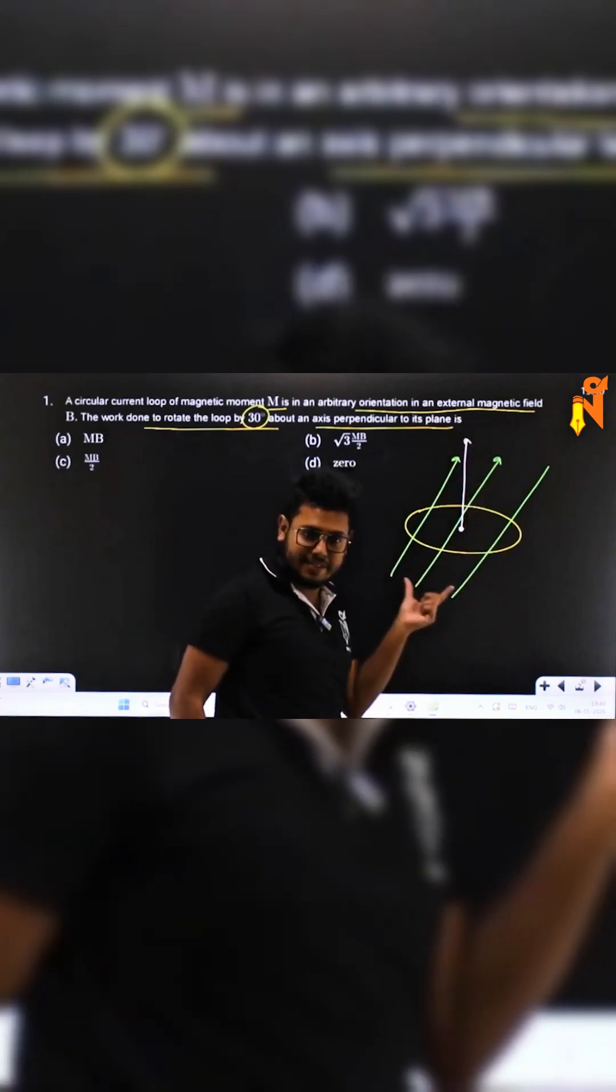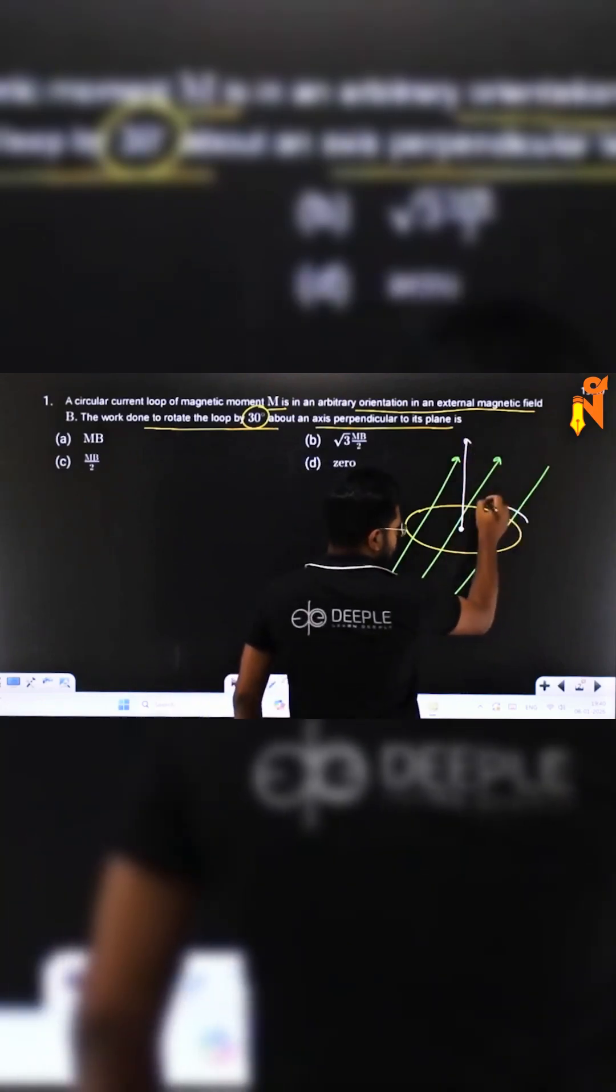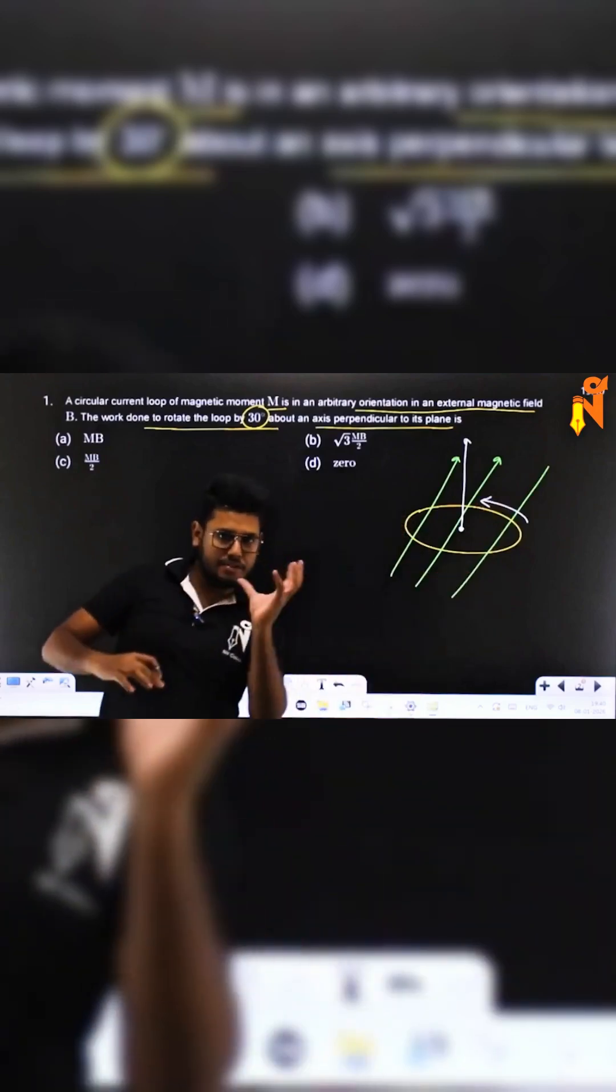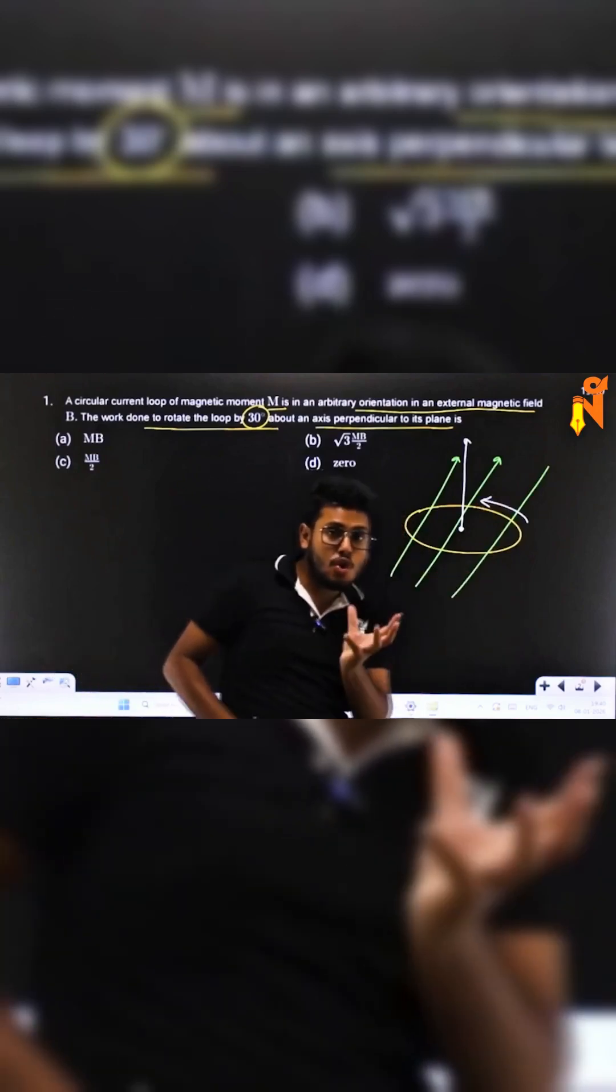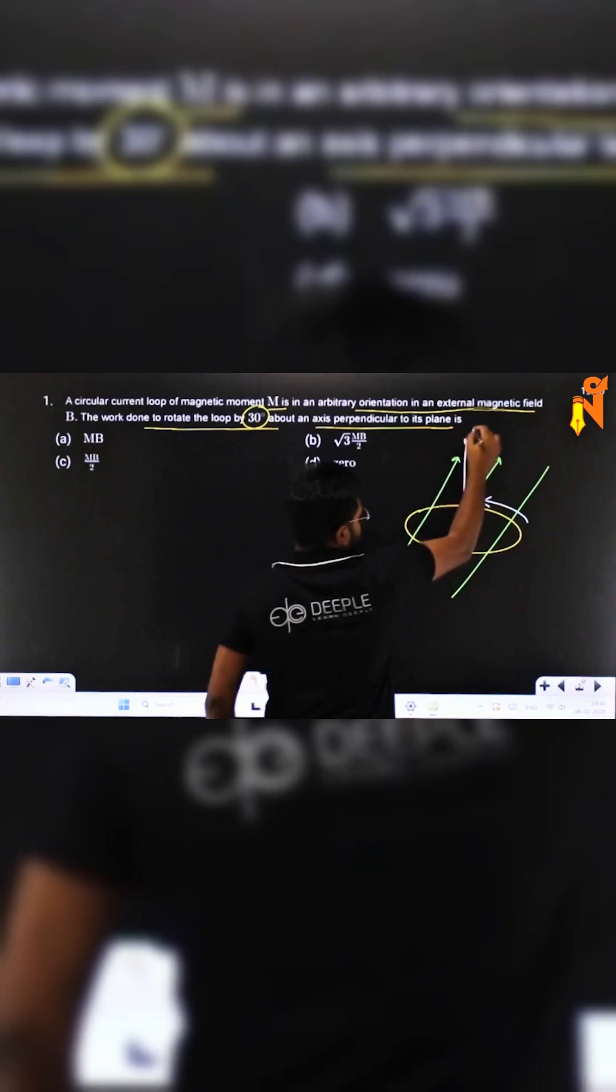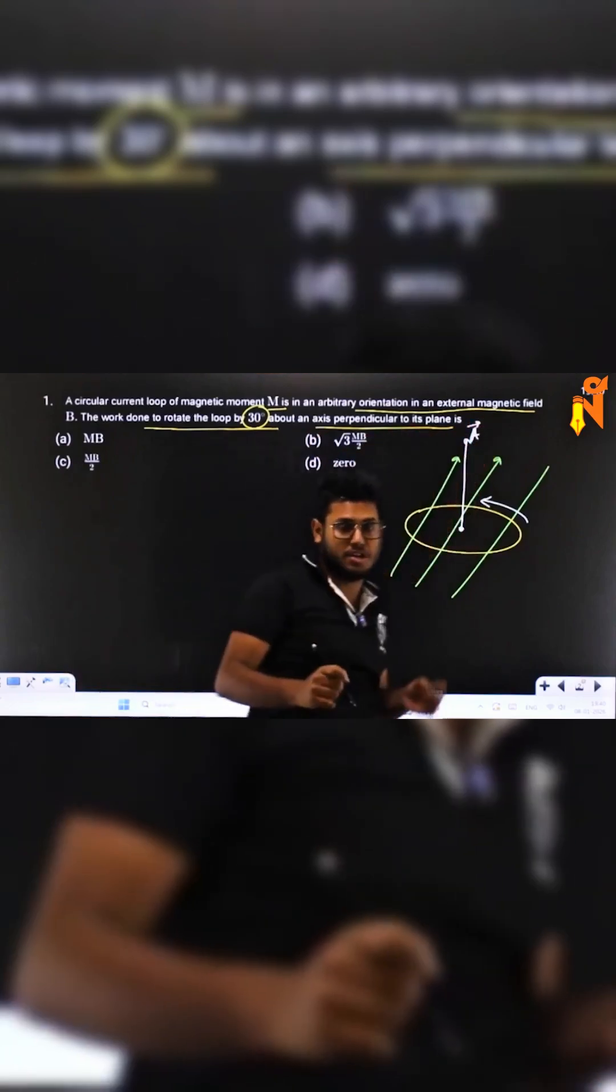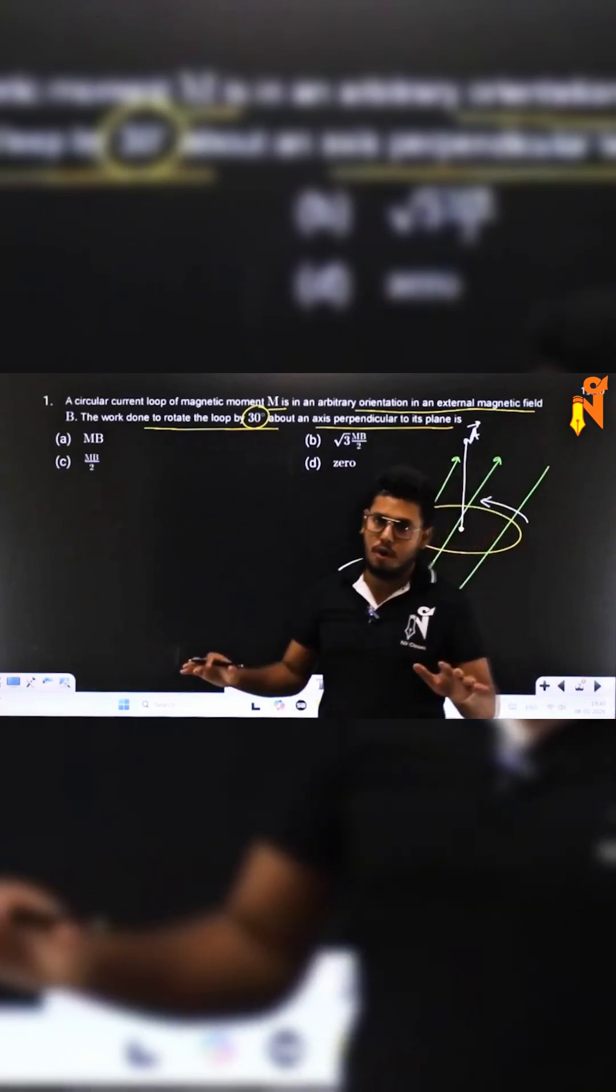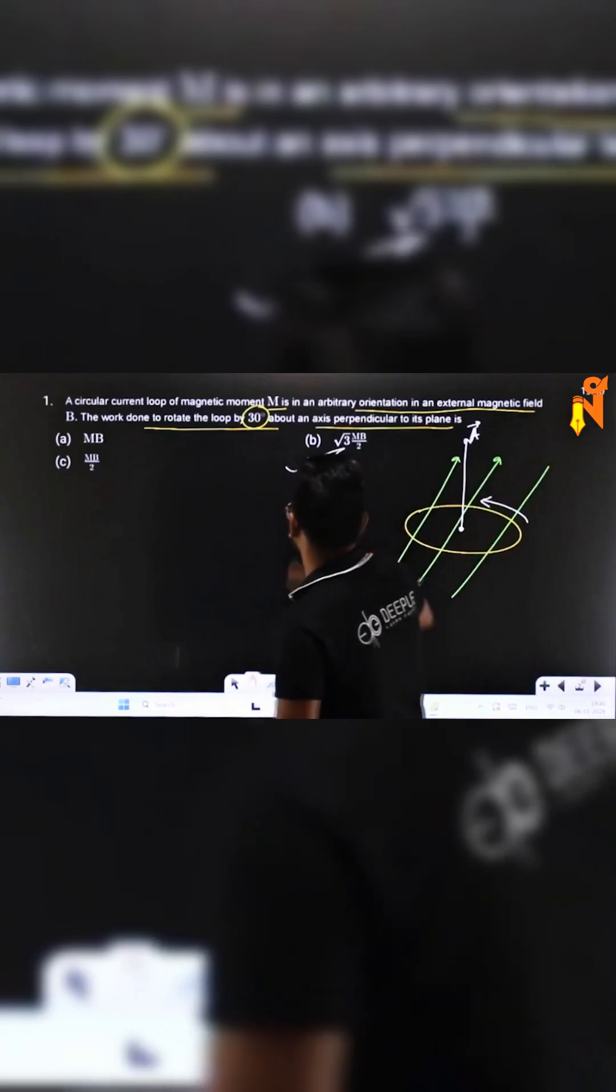About the axis if this thing rotates, the rotation will be kind of like this. Now if you look at it, the area vector is not doing any kind of rotation with the magnetic field, and in that scenario there is no work done. So work done is zero.